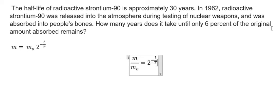So we have only 6%, that is 0.06. Because m is the amount after many years, and m₀ is the initial amount. So when we do this, we have 0.06.